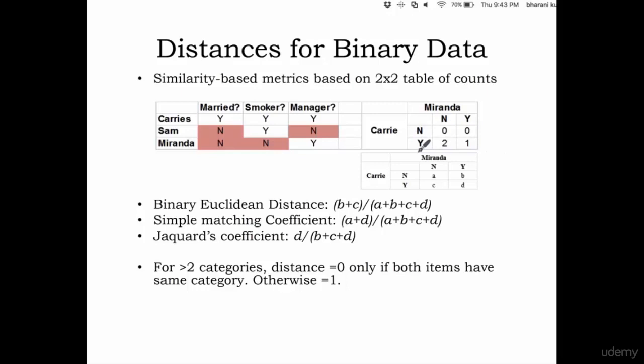Now do I have an instance where Carrie is Yes and Miranda No? There is one instance. Carrie Yes, Miranda No. There are two instances. So you get a two there.